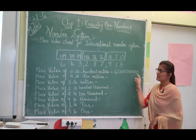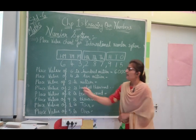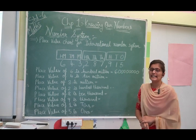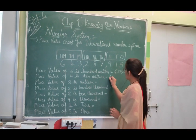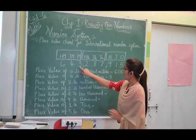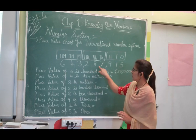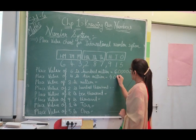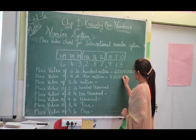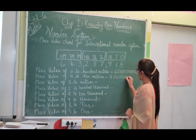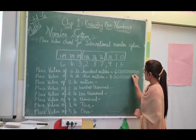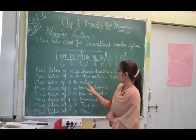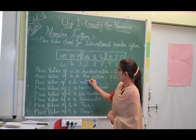The place value of 4 is 10 million. After 4, there are 7 zeros, giving us 40,000,000. The place value of 3 is 1 million. After 3, there are 6 zeros, giving us 3,000,000 — that is 3 million.